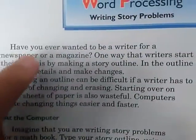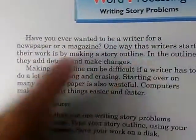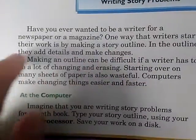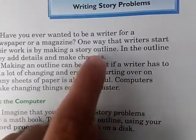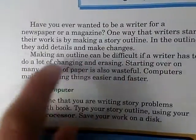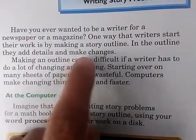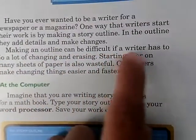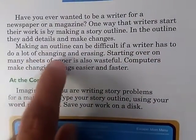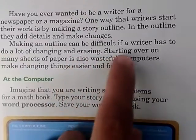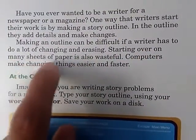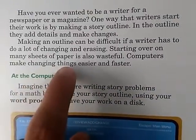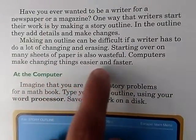Have you ever wanted to be a writer for a newspaper or a magazine? One way that writers start their work is by making a story outline. In the outline, they add details and make changes. Making an outline can be difficult if a writer has to do a lot of changing and erasing. Starting over on many sheets of paper is also wasteful. Computers make changing things easier and faster.